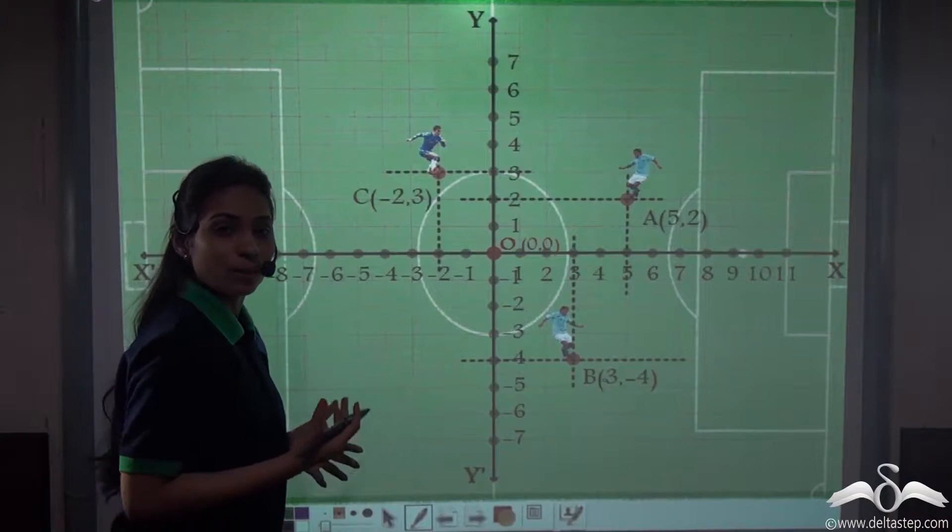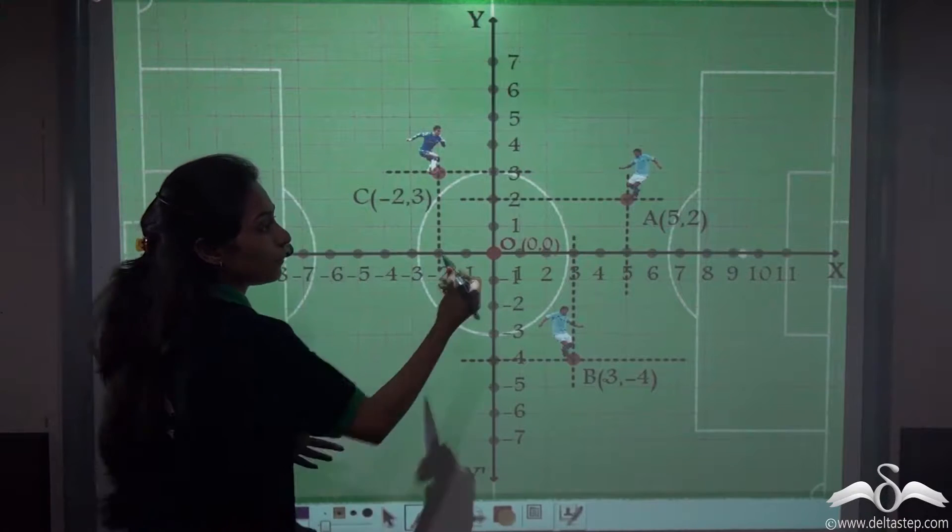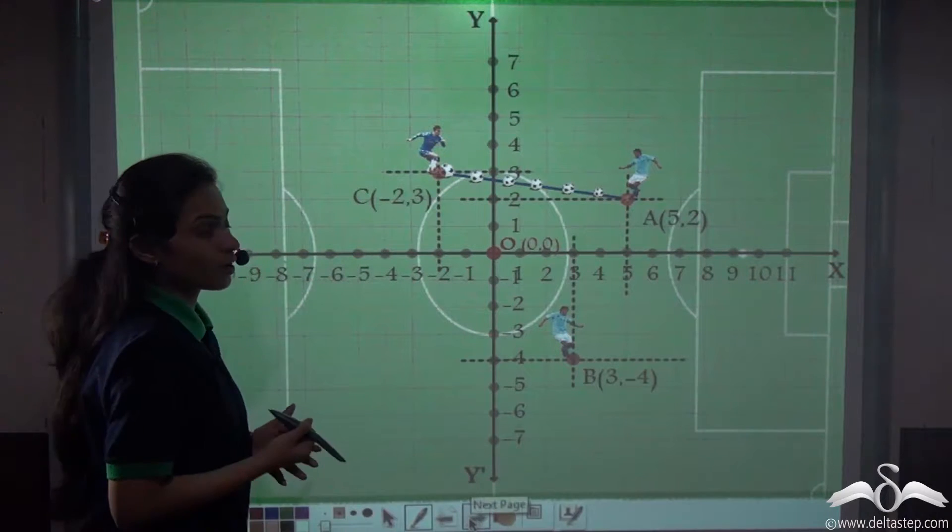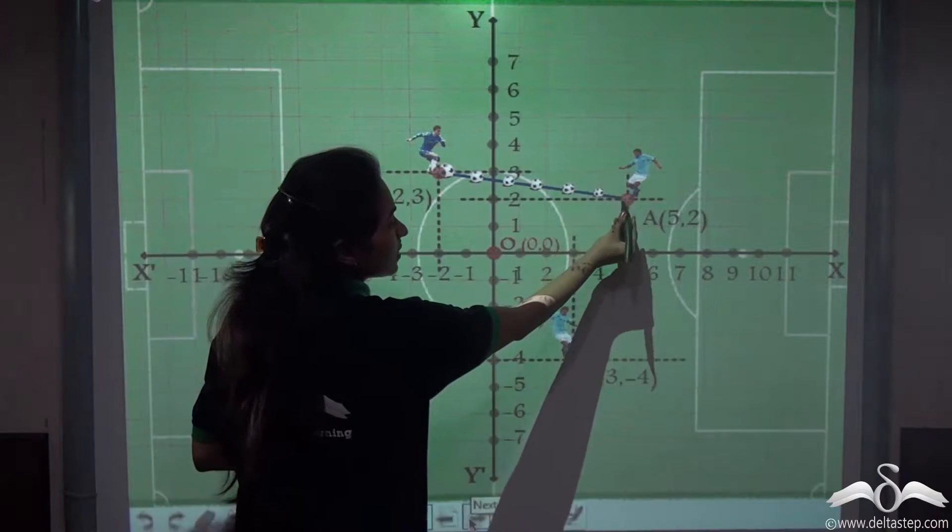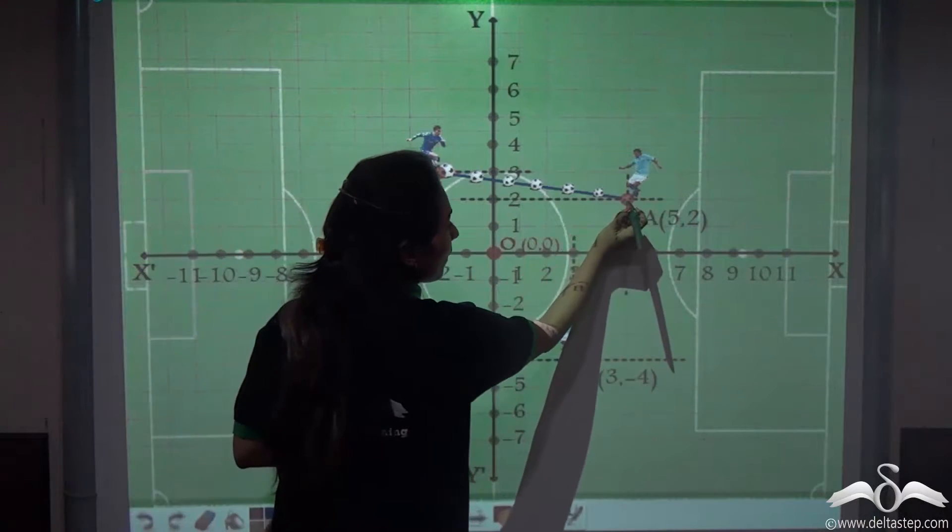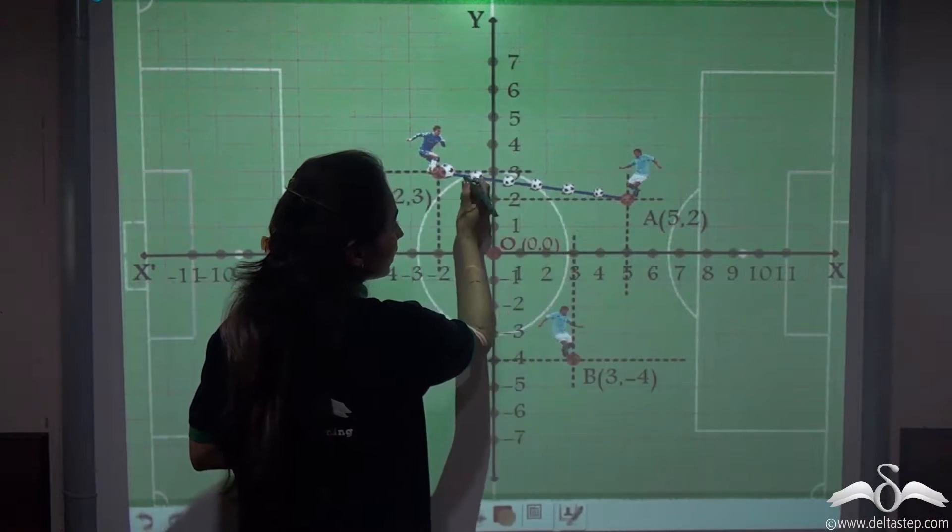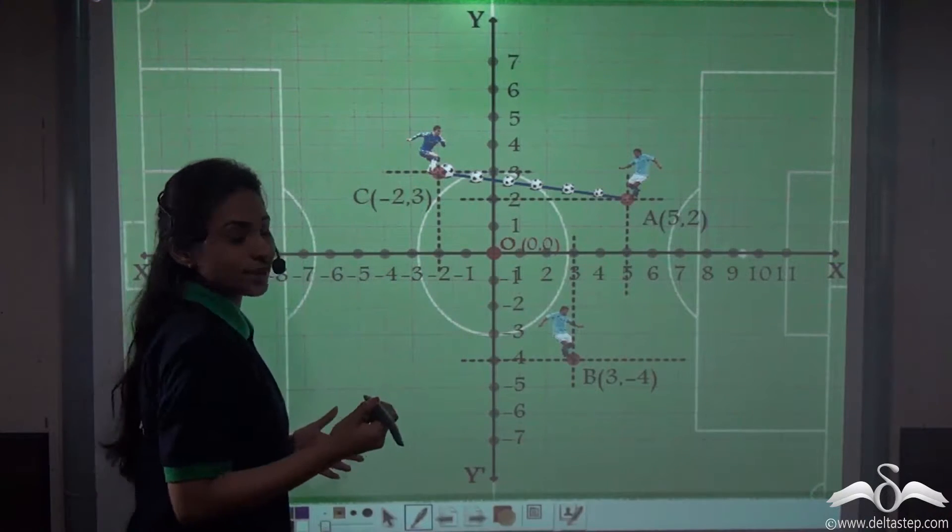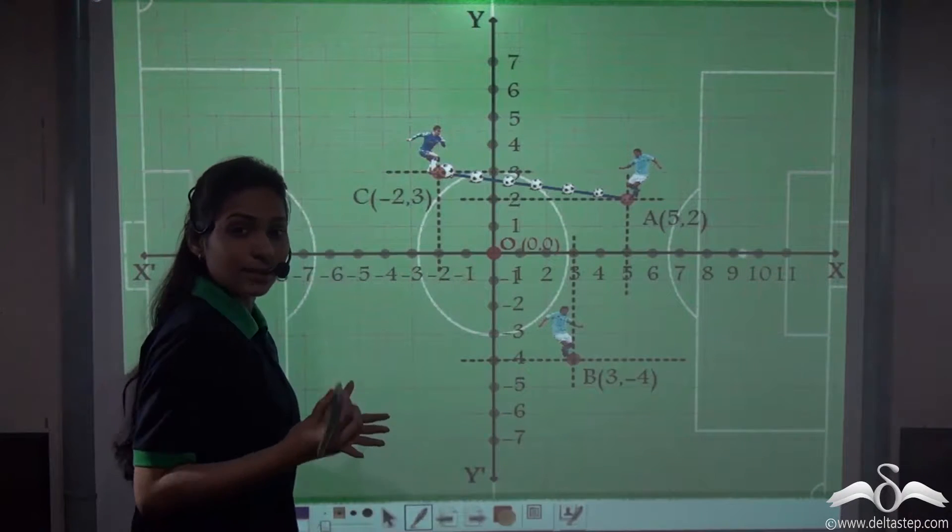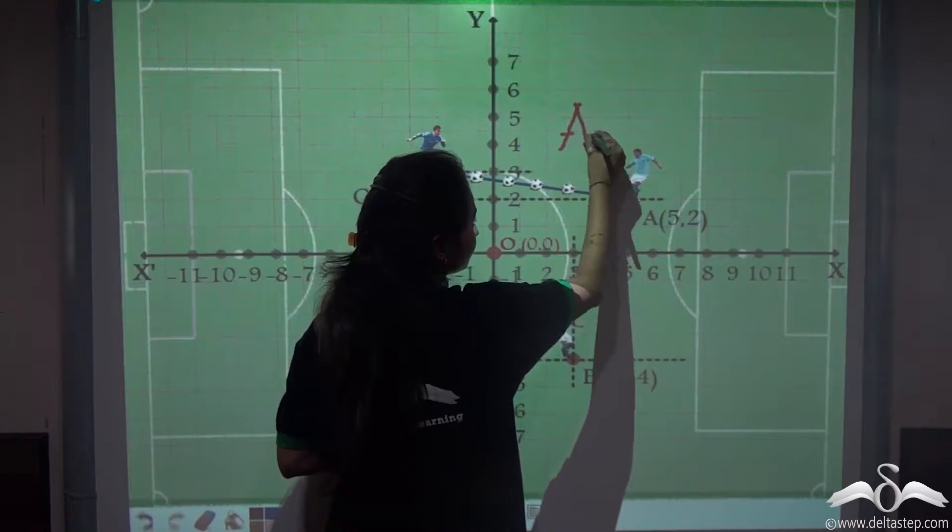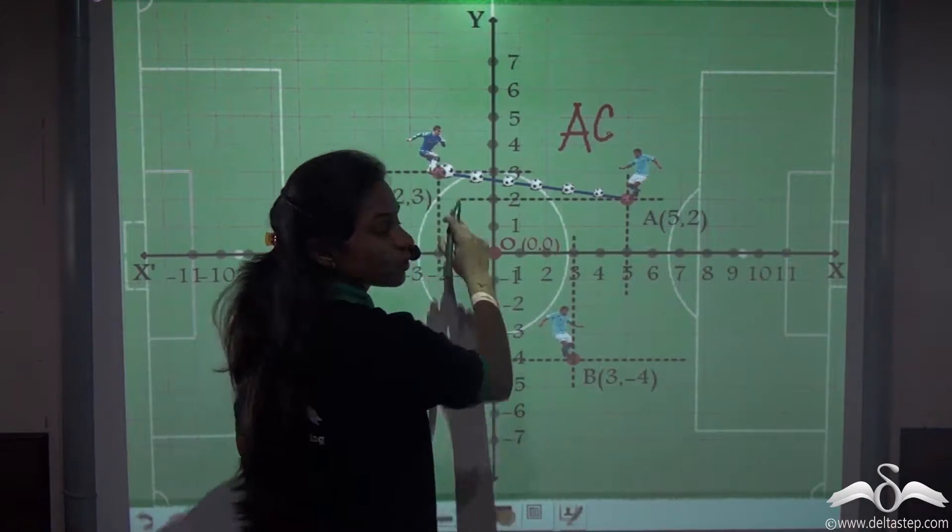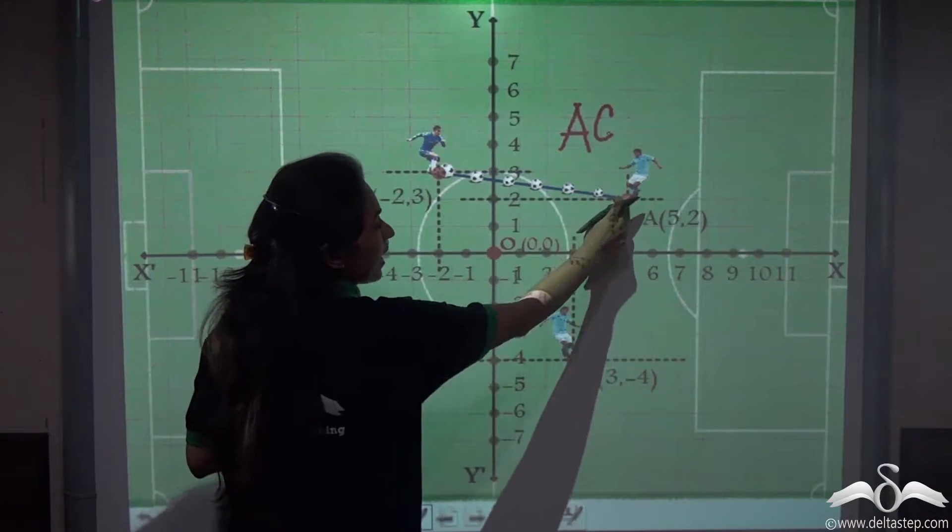Now he tells them to pass the ball amongst themselves. So player A passes the ball to player C. This is how the ball passes from player A to player C. Now if we trace the path of the ball going from player A to player C, you will see that it is creating a line segment. We can name this line segment as AC because it is joining the points A and C.